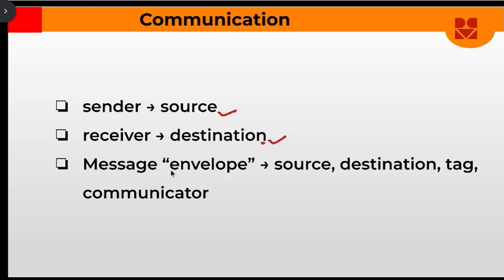When sending a message, we try to wrap it in an envelope. Think of a parcel you want to deliver to someone — inside the parcel is the message, but the wrapping or container is the envelope. The envelope has the source — where it is coming from — and the destination — who it is going to. The tag indicates what is inside: is it a letter, a reply, food?